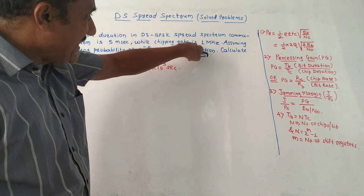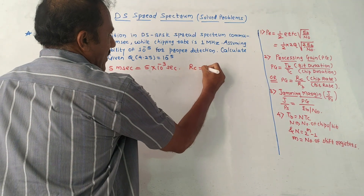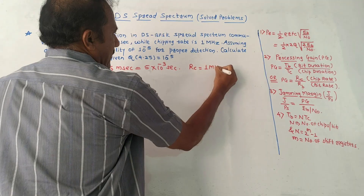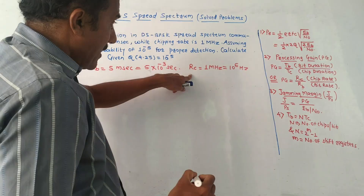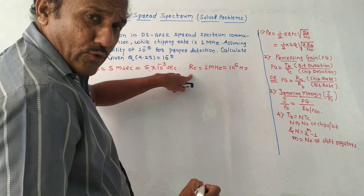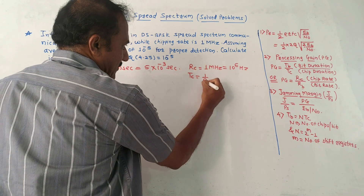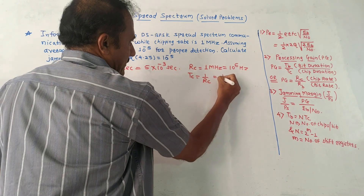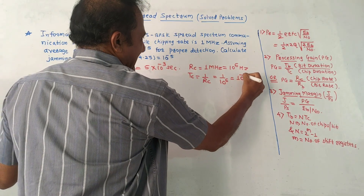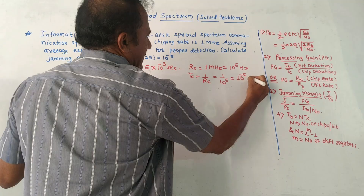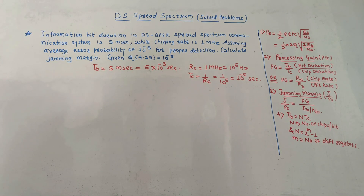Chipping rate is 1 megahertz. Chipping rate is actually RC, which is 1 megahertz, and we know that megahertz is 10 raised to 6 hertz. But we want to calculate the value of TC. TC is the reciprocal of RC, that is 1 by RC. So it is 1 by 10 raised to 6, that is 10 raised to minus 6, or 1 microsecond. So TC is 10 raised to minus 6 seconds, that is 1 microsecond.